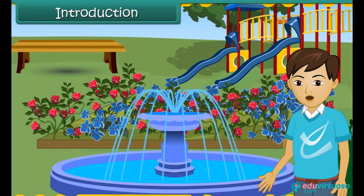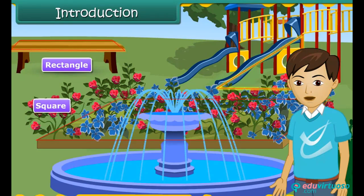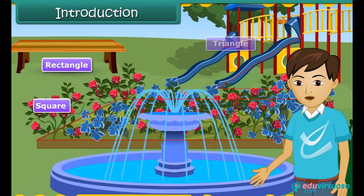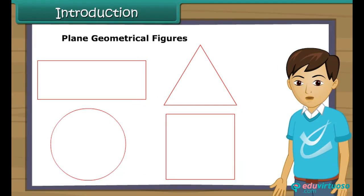Children, now analyze the shapes of different objects in this picture. The shape of the bench is a rectangle. The shape of the flower bed is a square. The slider's shape is a triangle. The shape of the fountain pond is a circle. These are called the plane geometrical figures. In this lesson, we will learn properties of different geometrical figures.